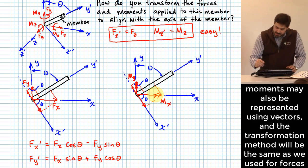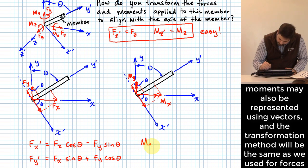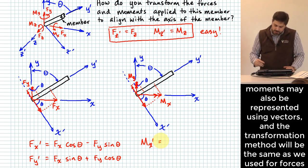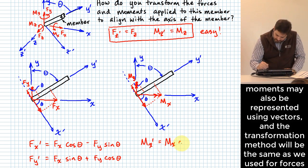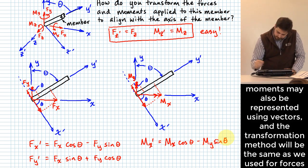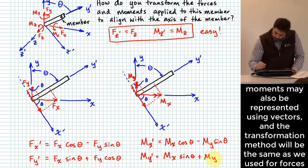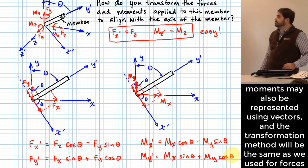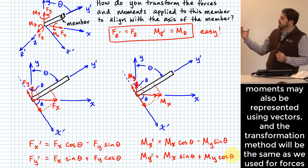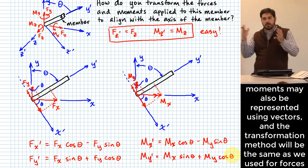After that, the math works the same as for forces. MX-prime equals MX·cosθ minus MY·sinθ, and MY-prime equals MX·sinθ plus MY·cosθ. We've used MX and MY to transform into MX-prime and MY-prime aligned along the new axes.